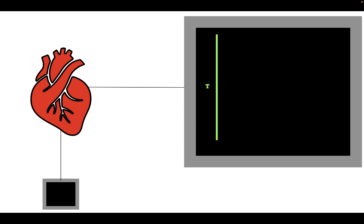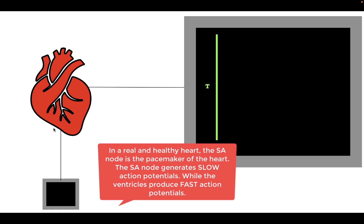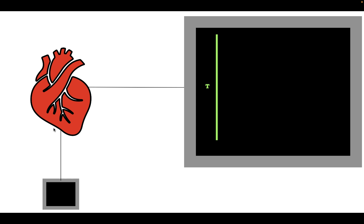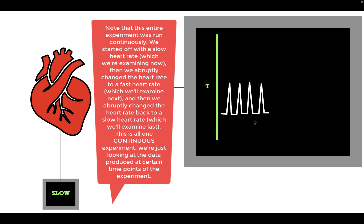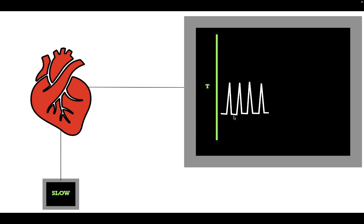We're going to begin by talking about what the staircase phenomenon actually is. Let's say we have a heart connected to a stimulus generator, which sends in impulses equivalent to action potentials — acting like the pacemaker. The generator sends stimuli at a certain frequency, causing ventricular fast action potentials, which elicit contractions measured as tension. Starting at a slow constant frequency, the heart produces the same tension throughout because the frequency is constant.